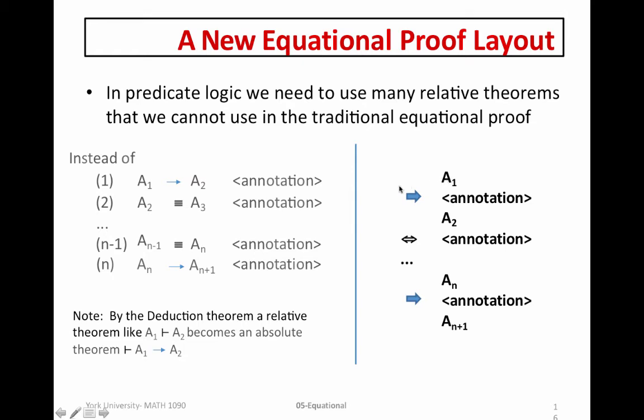For example, knowing that A and B is A, if we use split, if we have A and B, we can use this directional arrow to give us simply A if we need to, and we would use the relative theorem as our annotation here. So this now allows us to use relative theorems within our equational style proof.